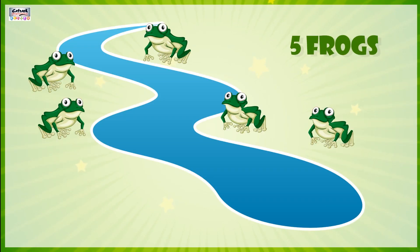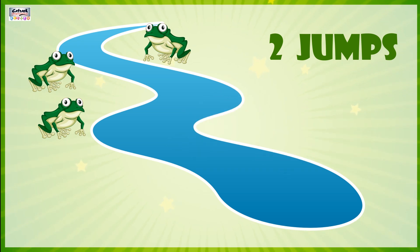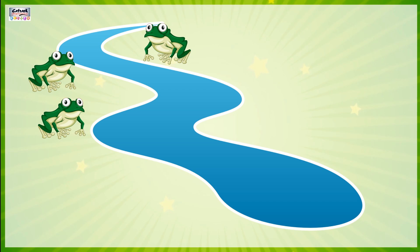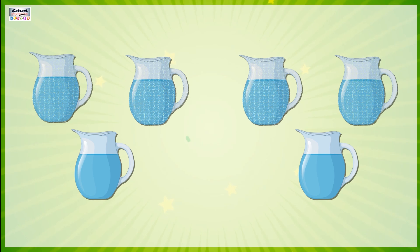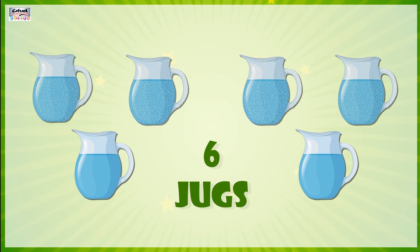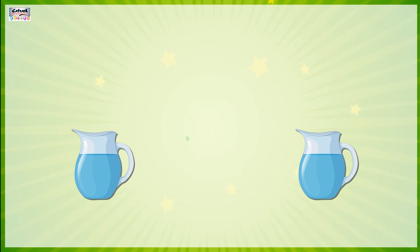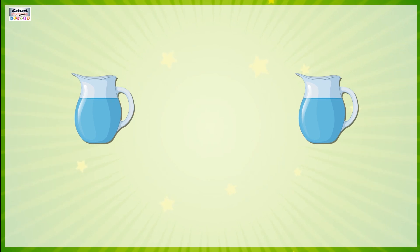There are 5 frogs. If 2 jump in the pond, we have 3 frogs left. There are 6 mugs. If 4 mugs break, we have 2 mugs left.